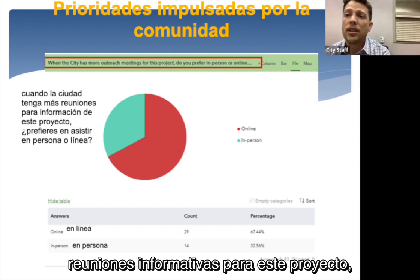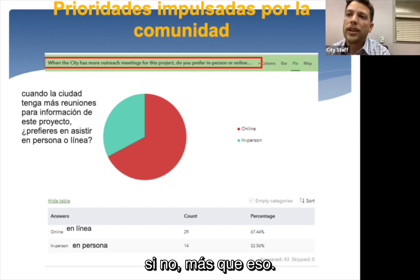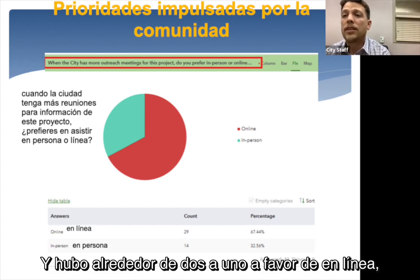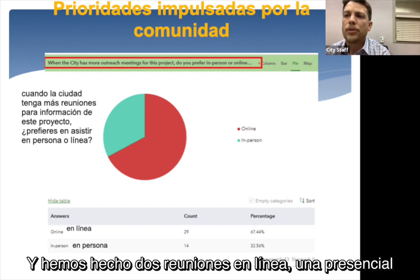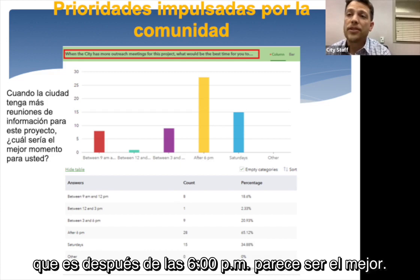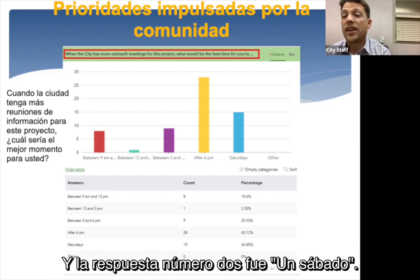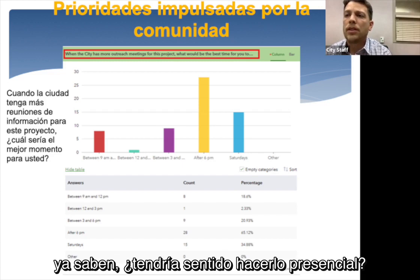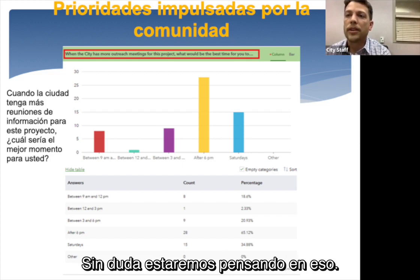We've had three community meetings but will probably have at least one more. When asked about format preference, it was about two to one in favor of online, which is what we're doing now. On the best time for meetings, after 6 PM — like right now — was the top answer, and Saturday was number two. We're looking at whether it's feasible to do one on Saturday, either in person or online.